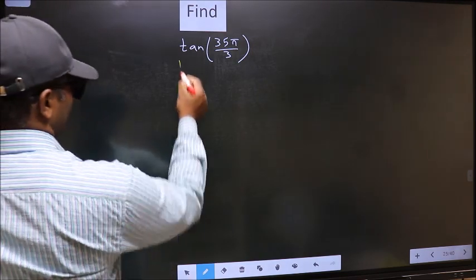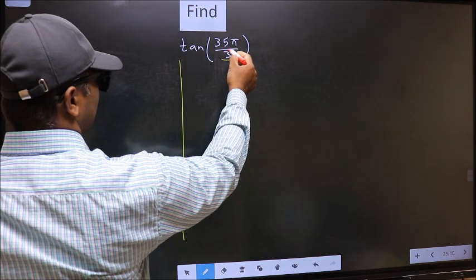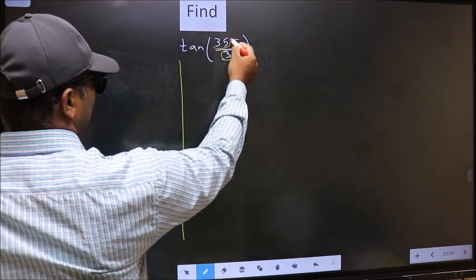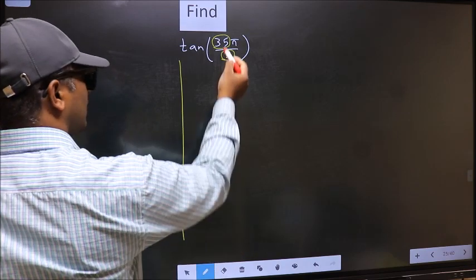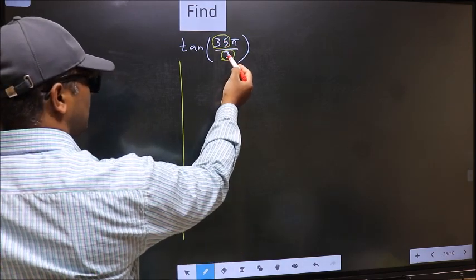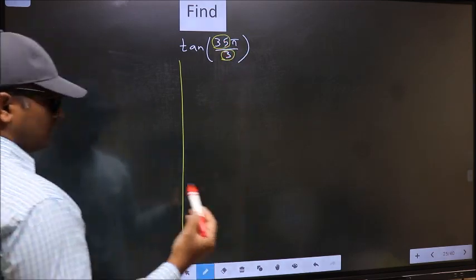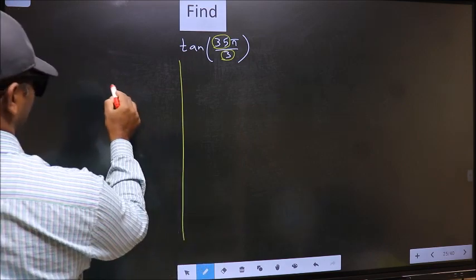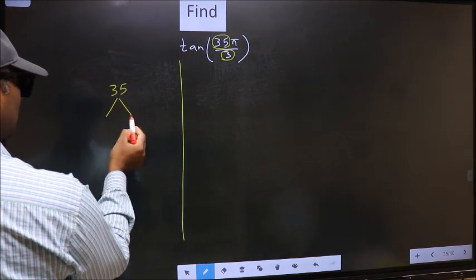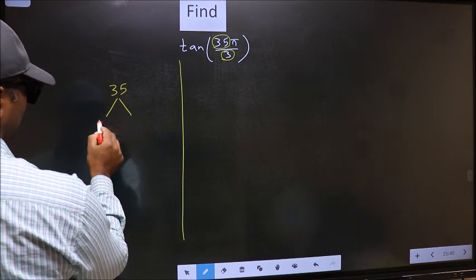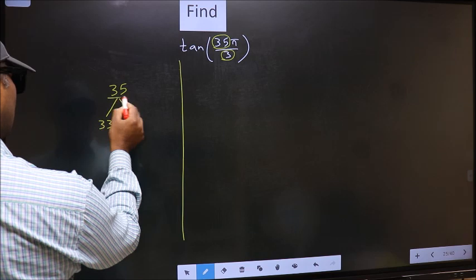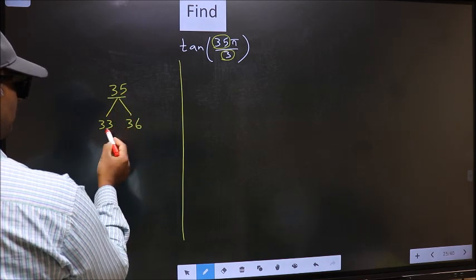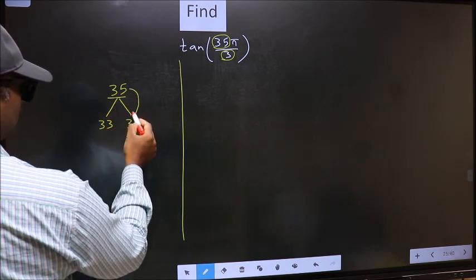In the denominator we have 3, in the numerator 35. Now you should check 35 is close to which multiple of 3. You should write multiples of 3, that is 33 and 36. Now 35 is close to which number? This is close to 36.